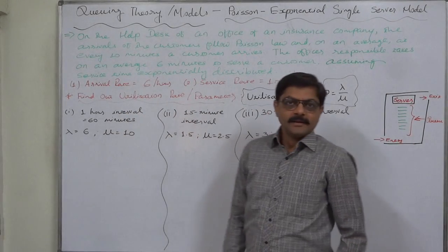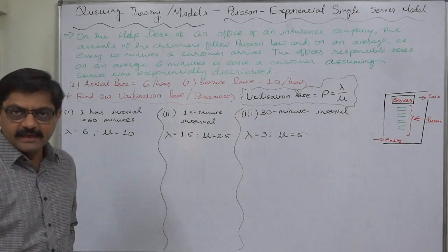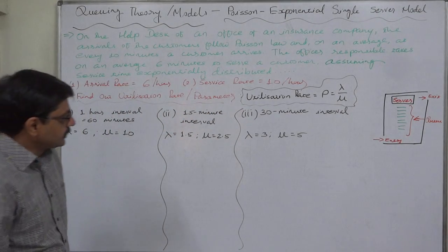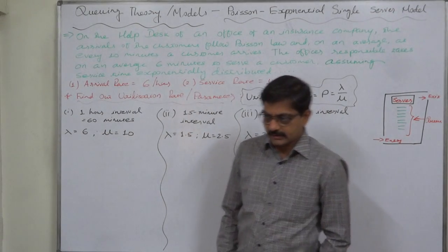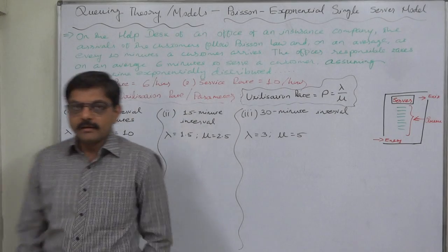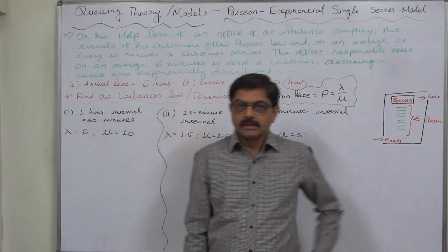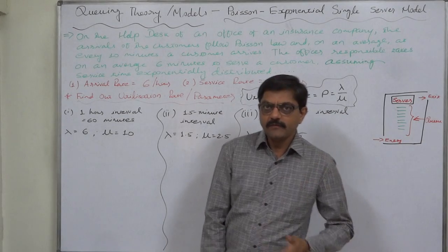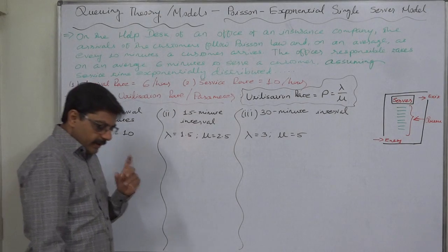Hello and welcome back. We have already discussed how to find out arrival rate as well as service rate. Now it is the turn of utilization rate or utilization parameter. In the previous two lectures, we found the arrival rate as well as service rate for three different time intervals: one hour, 15 minutes, and 30 minutes.